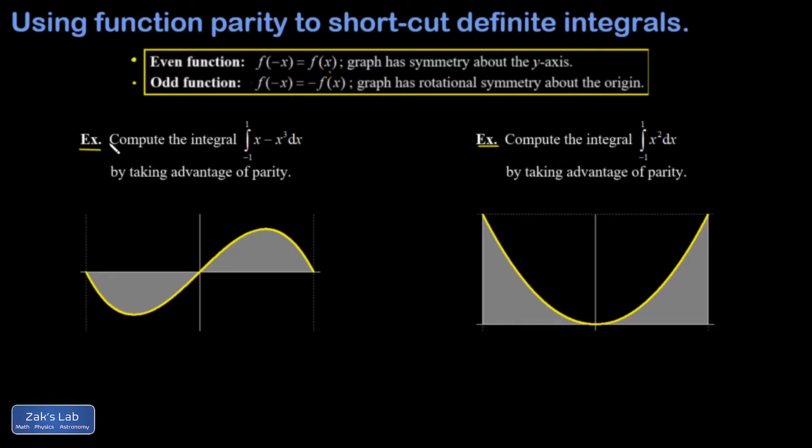If you ever run into an integral where the integration interval is symmetric about the origin, in both of these examples it's negative 1 to 1, that's symmetric, then you should be looking to take advantage of symmetry arguments wherever you possibly can. What I see in my first example here is that I have an odd function. I can tell by just looking at the symmetry of the graph.